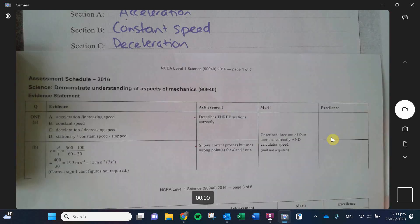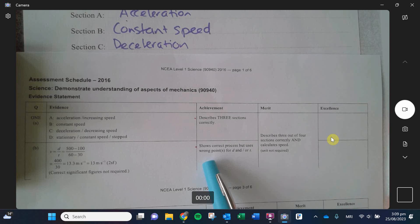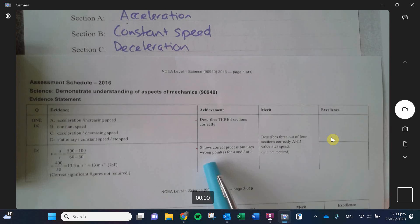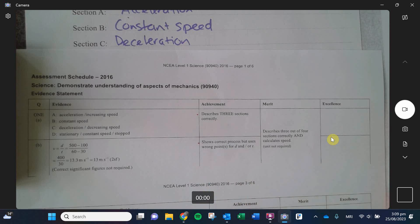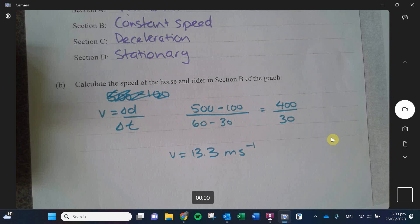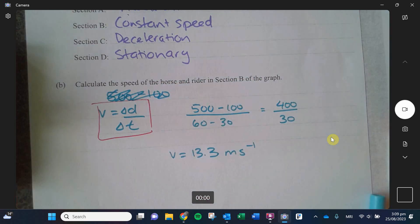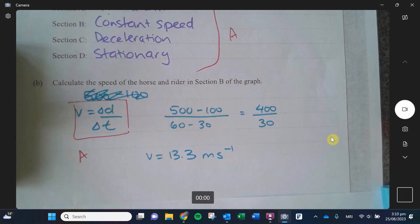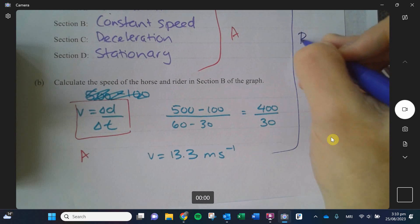Looking at the marking schedule. See what I'm saying for the achieved point? Shows correct process. So for the achieved, shows correct process, but uses the wrong point for either D or T. So what that is telling me is that so long as you grab this equation, and you plug in some numbers, even if the numbers were wrong, you can get an achieved point. That's why I want you to show your work. Show what equation you're grabbing. And then the merit point was if you got this answer correct and this answer correct. Pretty easy, huh? So there was an A point here. There's an A point here. And then if you got both of them, you got a merit point.